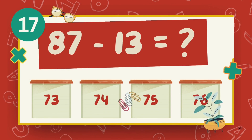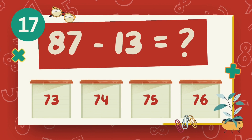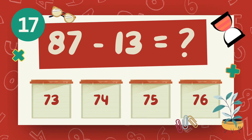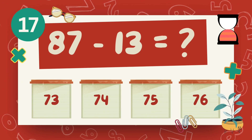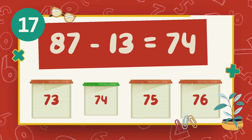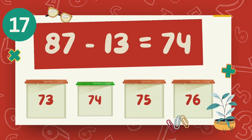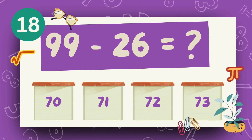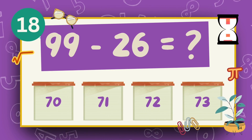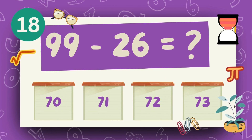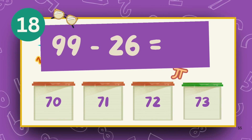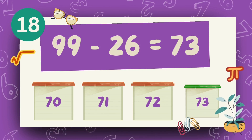What is 87 minus 13? The answer is 74. What is 99 minus 26? The answer is 73.